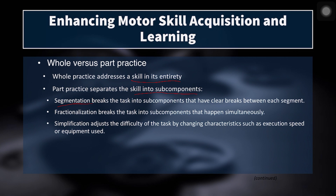Fractionalization breaks the task into subcomponents that happen simultaneously. Within the clean, you have the pull from the floor, the knees sweeping back, the transition to the power position, the second pull, the catch, and standing up with the load. You could break the clean down into each of those subcomponents, and further break each subcomponent into different parts — such as working on low back tension during the pull, the knees sweeping back off the floor, or the transition from the first pull to the power position.